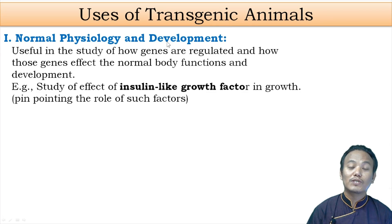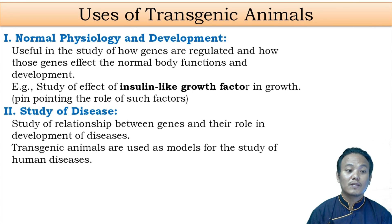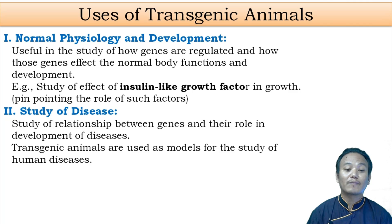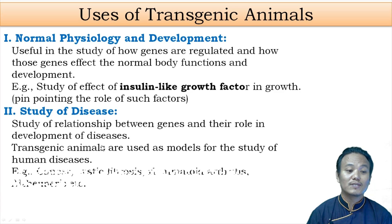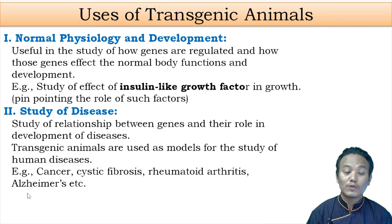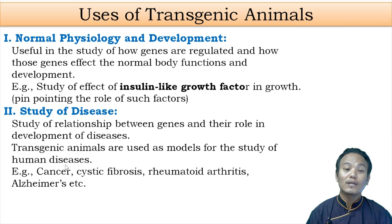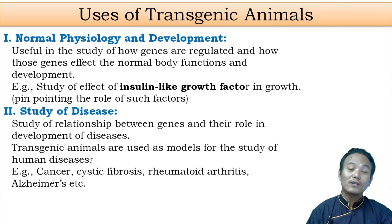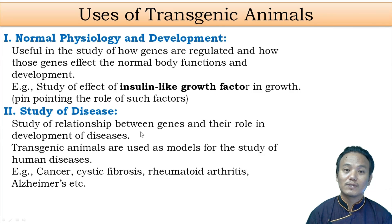The second use of transgenic animals is in the study of human diseases. If you want to study the relationship between certain genes and their role in the development of diseases, you can use transgenic animals as models. There are transgenic animals available as models for diseases such as cancer, cystic fibrosis, rheumatoid arthritis, and Alzheimer's. You can insert mutated genes into transgenic animals, study the development of those diseases, and create new treatment procedures.